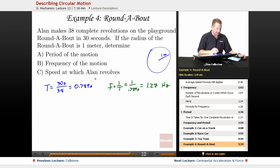And the speed at which Alan revolves. Speed is distance traveled divided by the time. That's going to be 2 pi times the radius, 1. He does 38 laps, 38 times around, and the total time to do all that is 30 seconds.